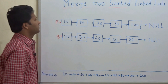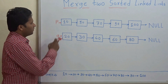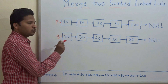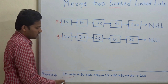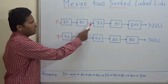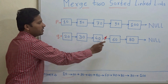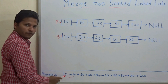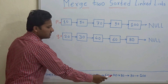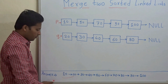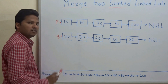Let's see here — these are the two sorted linked lists and we are going to merge these two linked lists to form a sorted linked list. The data is 10, 50, 70, 90, 100 and 20, 30, 40, 60, 80, and they merge to form this linked list: 10, 20, 30, 40, 50, 60, 70, 80, 90, and 100. So obviously our answer is a sorted linked list.